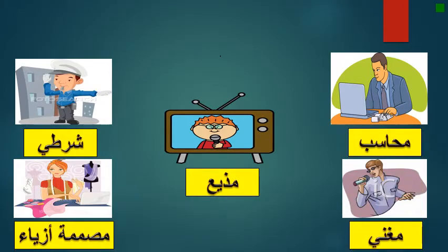We also have muhaasib — muhaasib means accountant. We also have the job of mudia — mudia means announcer. We also have shurty — shurty means policeman. Also we have the job of mughanee — mughanee means singer. And we have musawwimat azya — musawwimat azya means fashion designer.